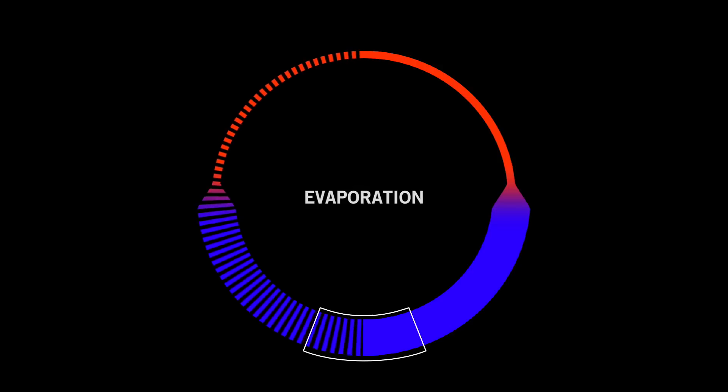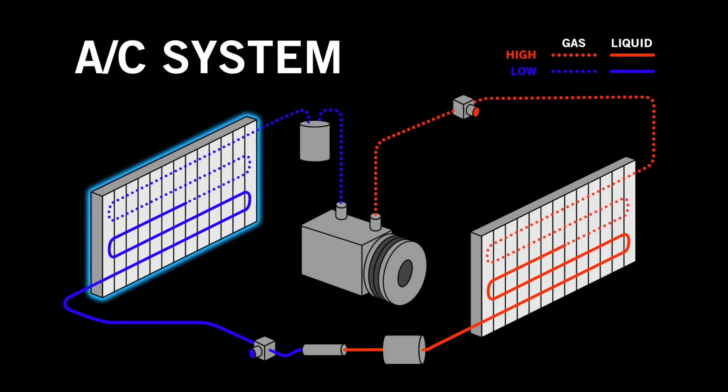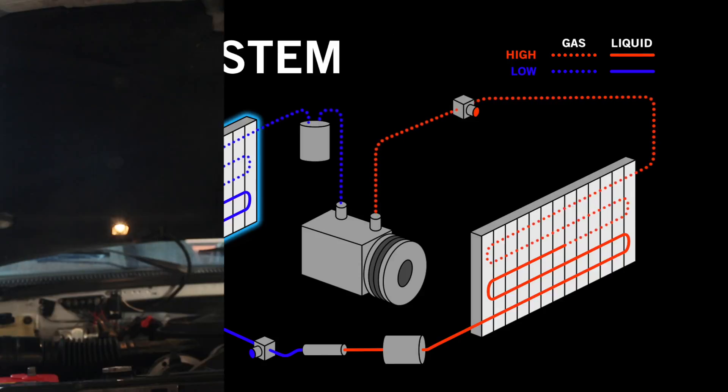Finally, we have the evaporator, which is located under the dash in the interior of the car. This is the part of the system that directly does the work of cooling the cabin.